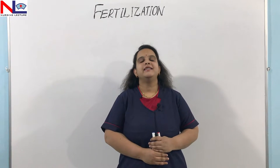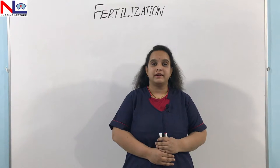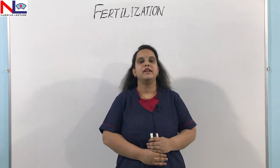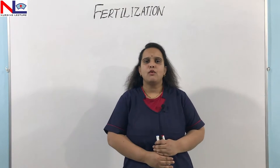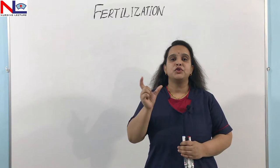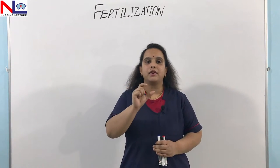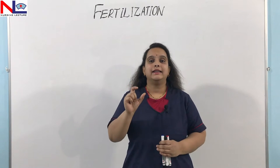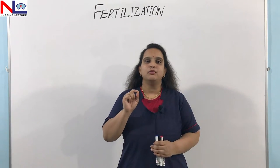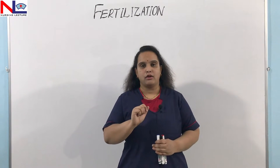Hi everyone. In this lecture, we are going to talk about what is fertilization and how this process is going to take place in the female genital tract. Fertilization means the fusion of two pronuclei — one from male and one from female — and this fusion ultimately forms a single cell, that is a mononucleated diploid cell called the zygote.